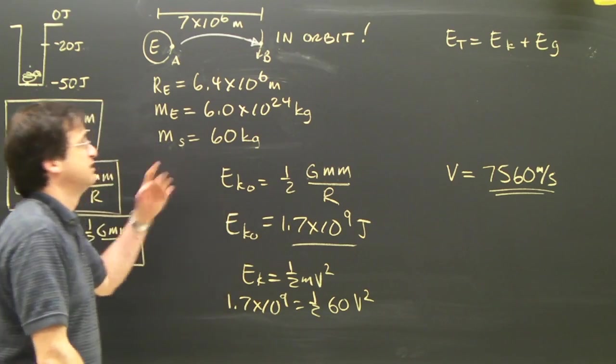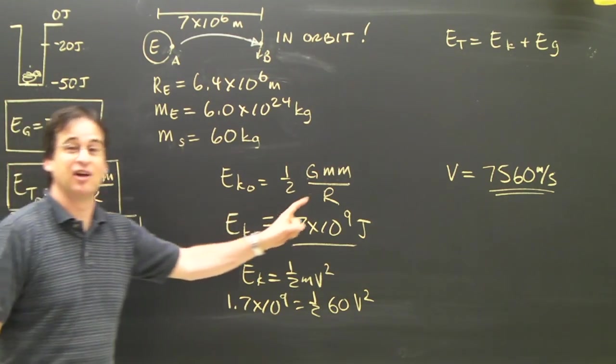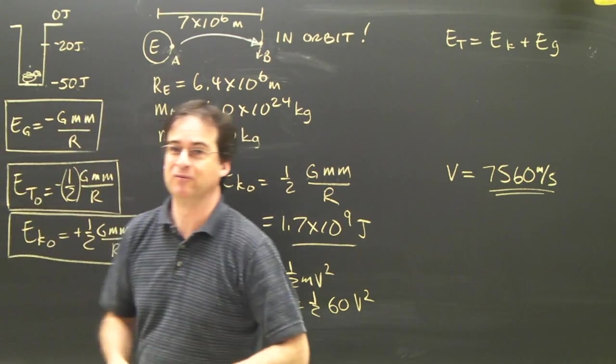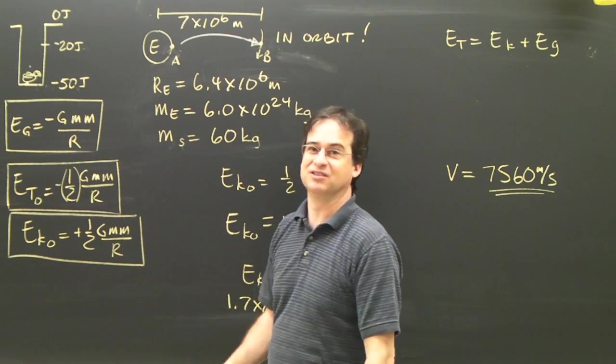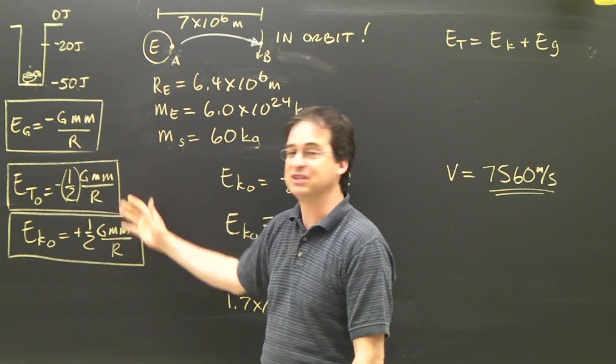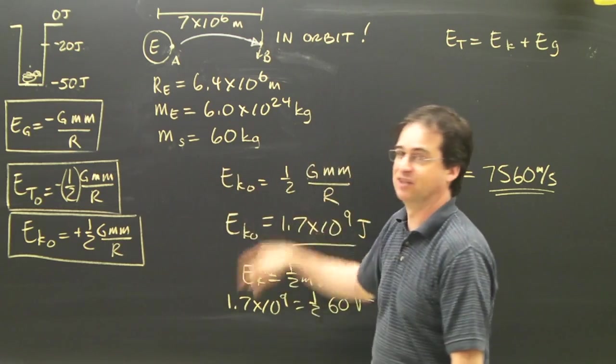You should end up with v equals 7560 meters per second. That's the velocity the object will have once it's in orbit. So what are you going to do? You've got to memorize a few formulas. You have these formulas at your fingertips, and you'll be able to calculate most of this quite easily.